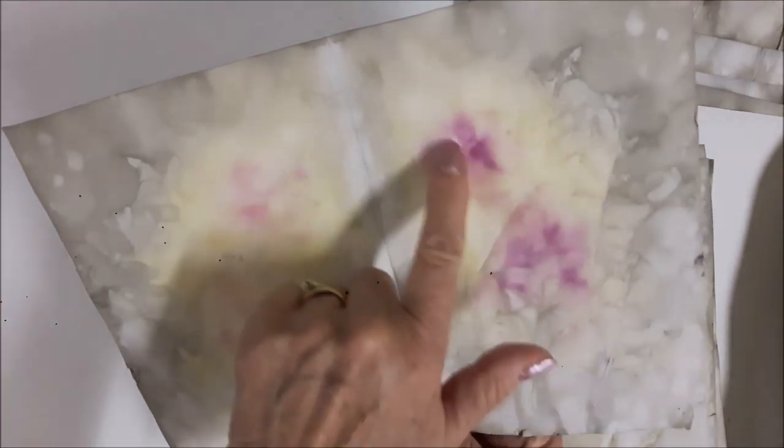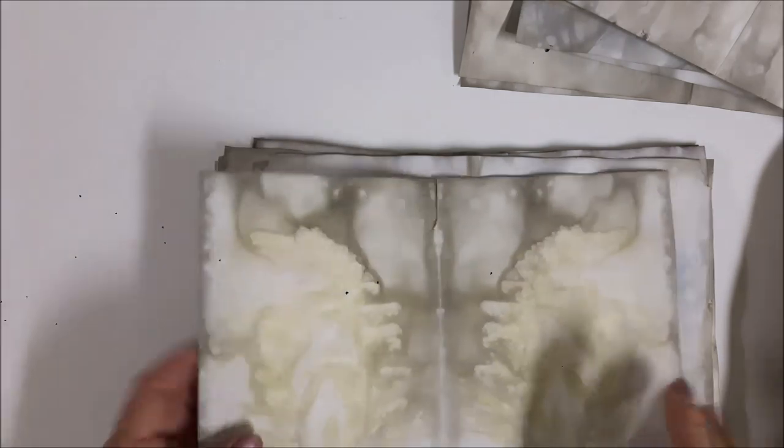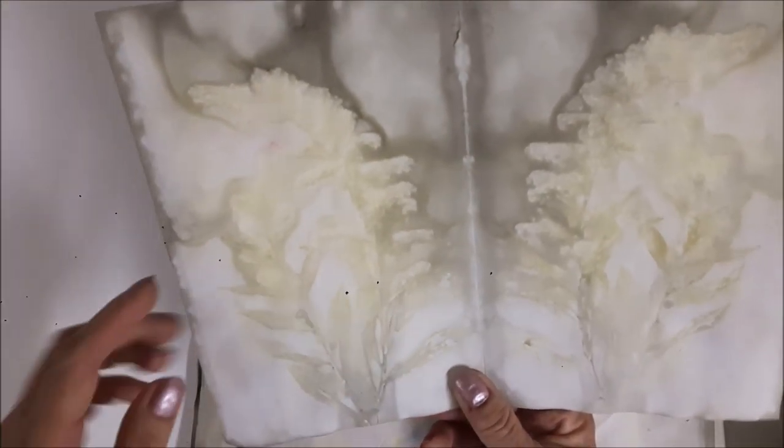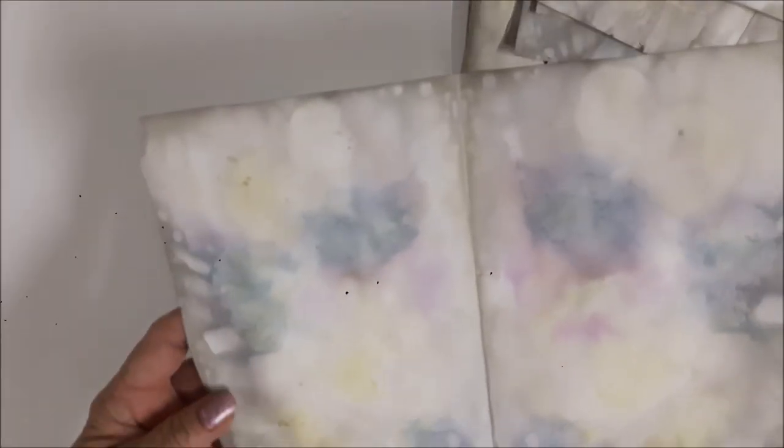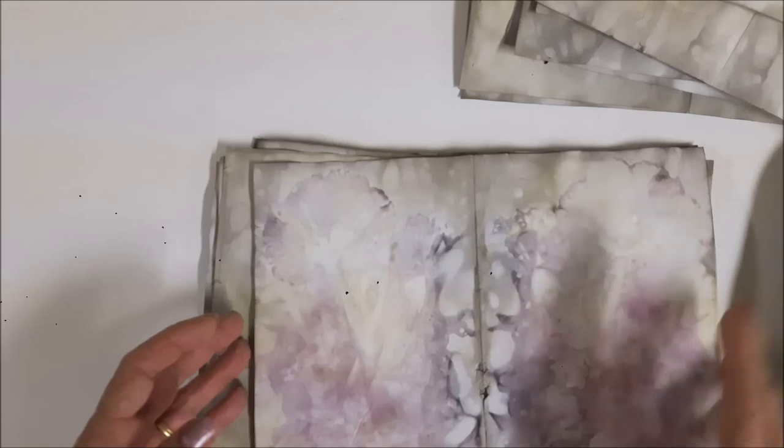Okay, this is the Dusty Miller, the annual Dusty Miller with the salvia. That's cool way the yellow got there. I bet you this is the ragweed. That turned out pretty cool too.